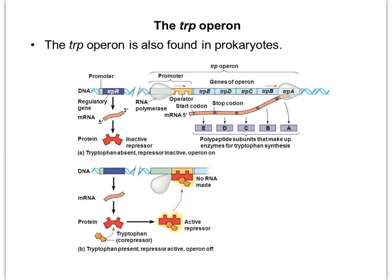The trp operon is another type of operon found in prokaryotes. Trp stands for tryptophan, one of the 20 amino acids. This operon acts very similar to the lac operon, but in the exact opposite way, because the enzymes being made are for tryptophan synthesis — making tryptophan. If tryptophan is absent, it makes sense to turn this operon on so that we can make more tryptophan with those enzymes.